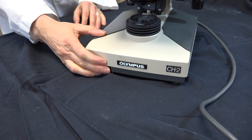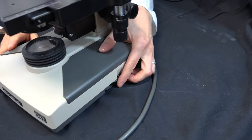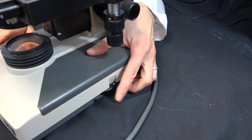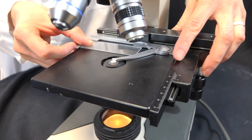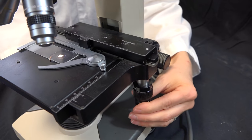Begin by turning your microscope on and adjusting the light intensity to about 5 or 6. Then place your slide in the clamp on the stage and center the specimen over the condenser.